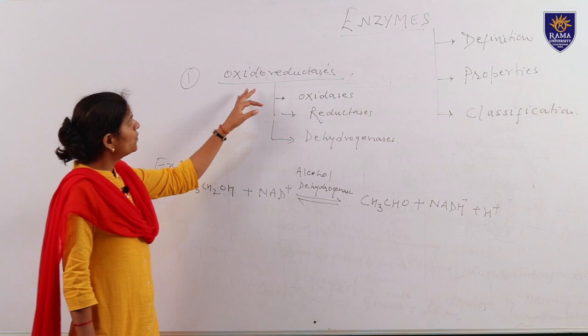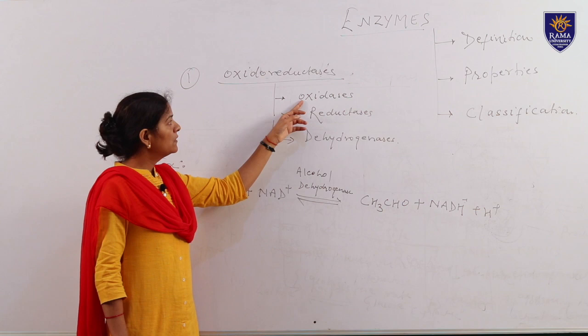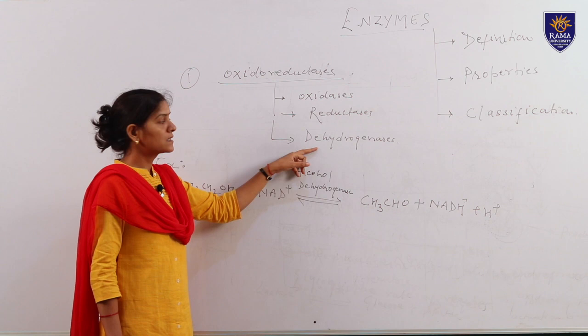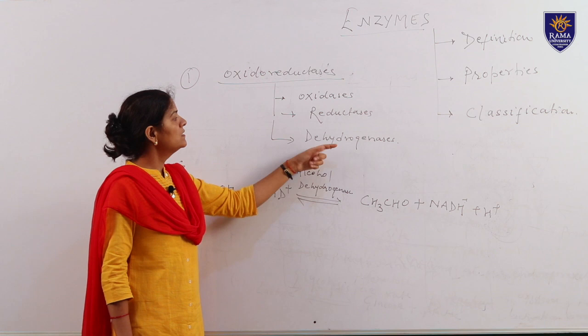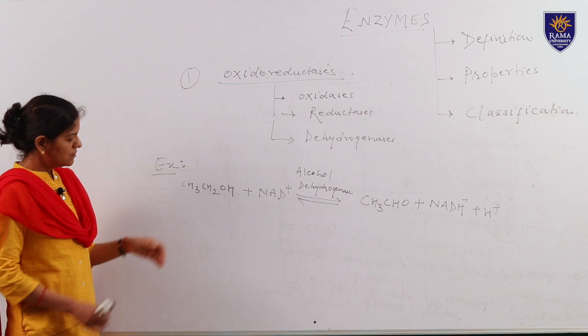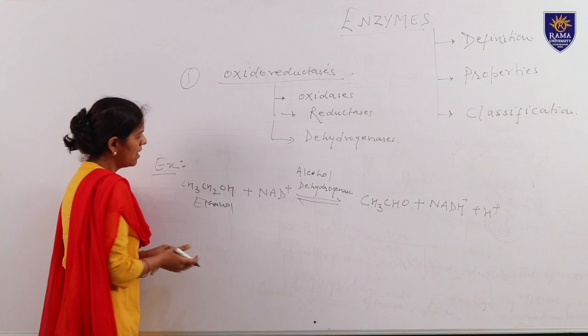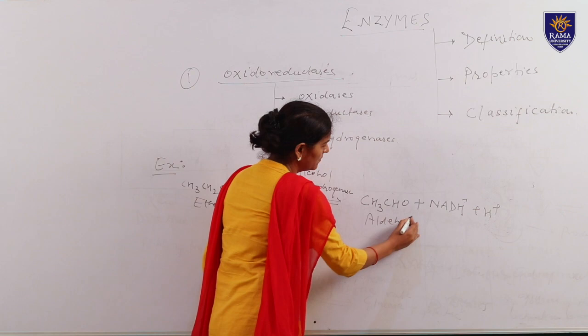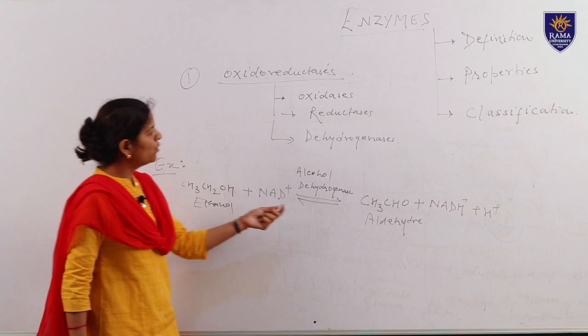The subclasses of oxidoreductase enzymes include: first, oxidases, which perform oxidation reactions; reductases, which carry out reduction reactions; and dehydrogenases, which perform dehydrogenation reactions — meaning removal of hydrogen. Here I have given an example in which ethanol undergoes dehydrogenation in the presence of the enzyme alcohol dehydrogenase to give a product aldehyde. In this reaction, two hydrogens are eliminated in the form of NADH plus H+ ions.